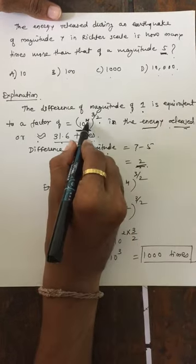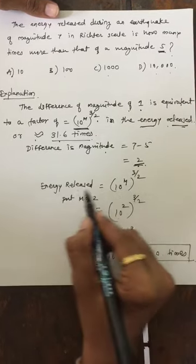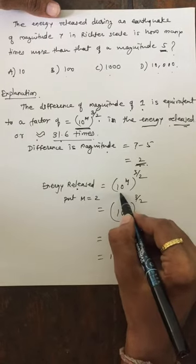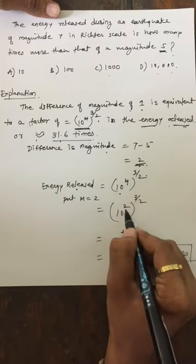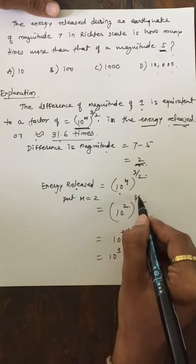Put the value of magnitude in given formula. Energy released is equal to 10 to the power m to the power 3 by 2. So, 10 to the power 2 to the power 3 by 2.